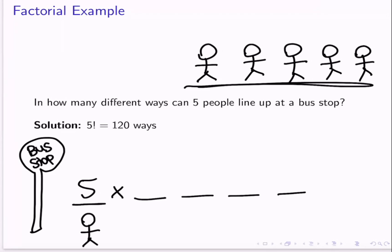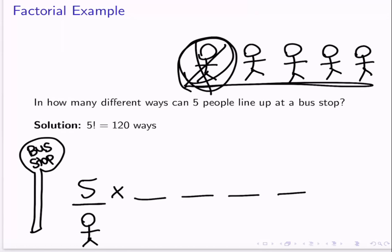I don't know necessarily which person specifically lined up first — it could have been a different person — but it doesn't actually make a difference. The point is that in any case, there's one person who already lined up in the first spot, and we want to know how many people are left for the second spot. Well, there are only 4 people left, because whoever lined up first isn't going to line up again. So 4 people left.